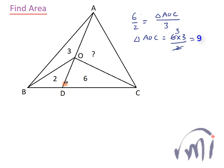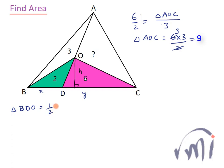If we consider triangle BDO and triangle DCO, BDO has base BD and DCO has base DC, and both of them will have the same height — a perpendicular from their common vertex O to line BC. If I assume the length of BD as X and the length DC as Y, then the area of triangle BDO will be equal to (1/2) × X × H and the area of triangle DCO will be equal to (1/2) × Y × H.